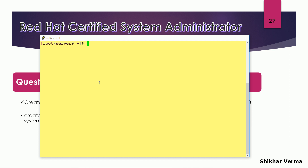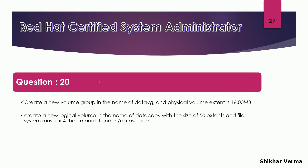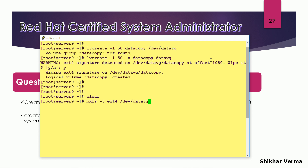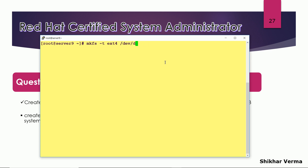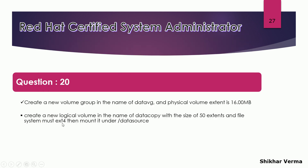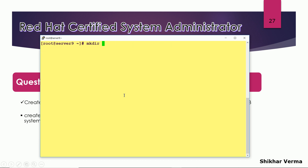Next, I have to format the file system: mkfs -t ext4 followed by the logical volume path under data VG. The logical volume has been formatted with ext4. If the exam specifies vfat or xfs, format accordingly. Now I have to mount it under /data/source, so first I will create that directory.